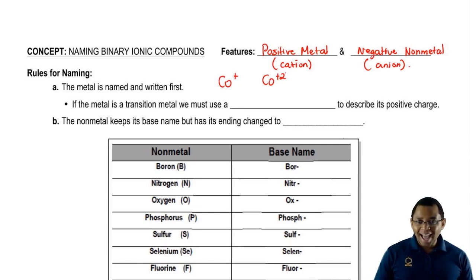But how do I know which one I have when I have my ionic compound? When we have the metal as a transition metal, we have to use a roman numeral to describe the positive charge.